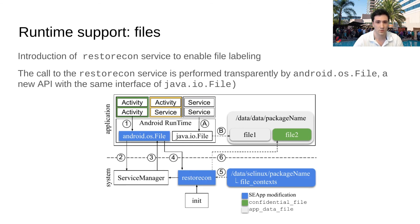To do that, we introduced a new system service called RestoreCon. The call to the RestoreCon service is transparently handled by android.os.file, a new API with the same interface as java.io.file. This implementation strategy has several advantages, including backward compatibility, support for regexp via file context, no performance impact on applications that aren't using SEAP, and we still support file labeling based on inheritance of parent type.